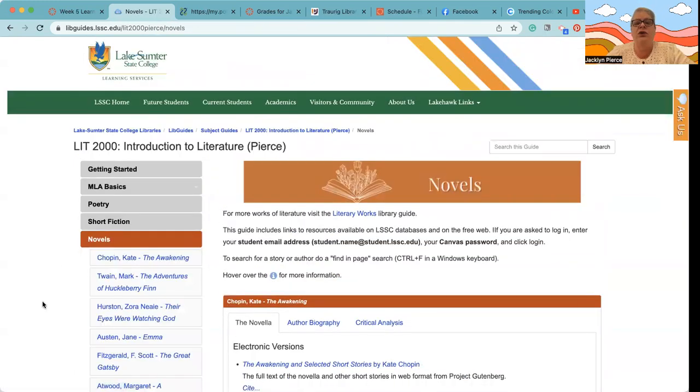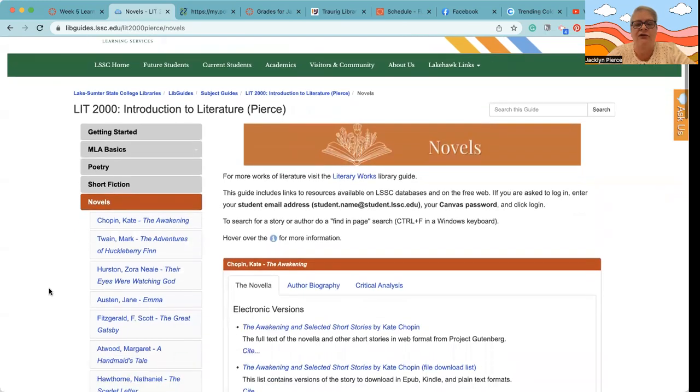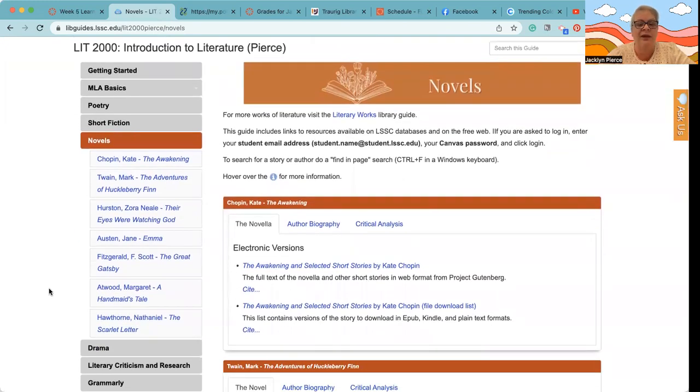While we're on this page, if you look directly below the short story list, you will find the novels. Now you do need to pick a novel from this list. You don't have to read it electronically if you wanted to buy a copy of the novel so that you have a physical copy. You can get that from anywhere. Typically, of course, Amazon has books cheap.